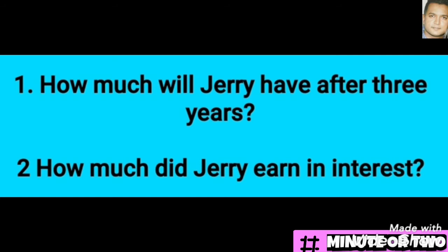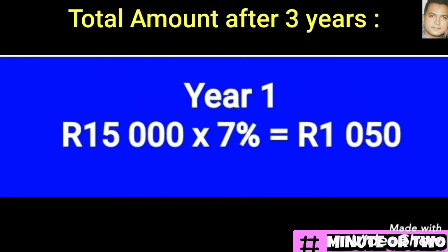In answering question one, we find the percentage for the first year and arrive at our answer. This is the way you present your answer in exams. At Mathlet, we ask learners to present answers as Year 1, Year 2, and Year 3. Unlike math students who use the formula, we advise Mathlet learners to present answers in steps. Remember the interest for the first year, because it will be added to your principal to calculate the second year's interest.